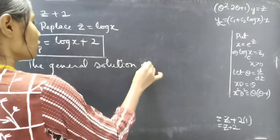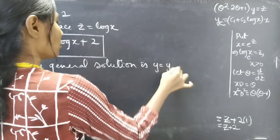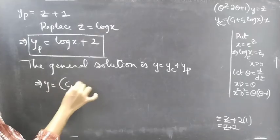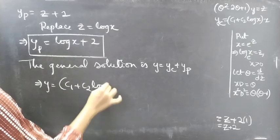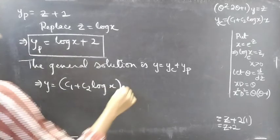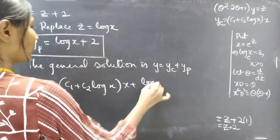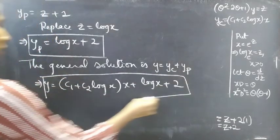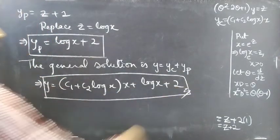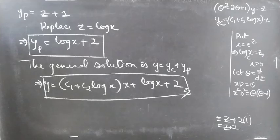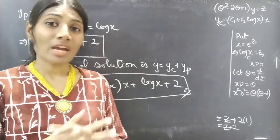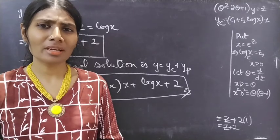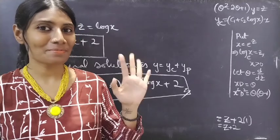The general solution is y = yc + yp. Therefore y = (c₁ + c₂ log x) · x + log x + 2. This is the required solution. We have solved a problem from higher order linear differential equations with variable coefficients. Hope you understand — see you in the next video, bye bye.